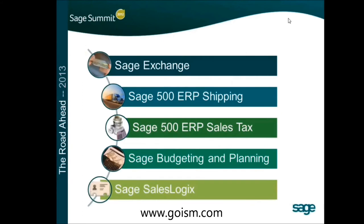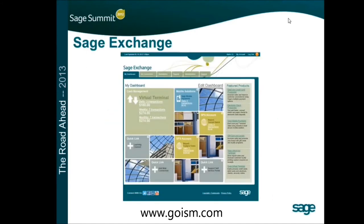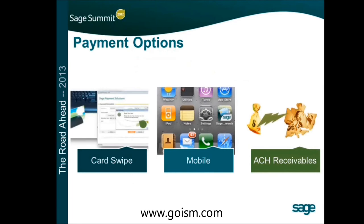Going forward, the connected services include Sage Exchange — which we talked about with credit card processing. When they roll this out, it will have a Metro-style look, showing daily transaction volumes and quick access to account sections. They're increasing security significantly so people from your organization can only see what they need to see. They're also adding mobile options and ACH receivables through Sage Exchange.